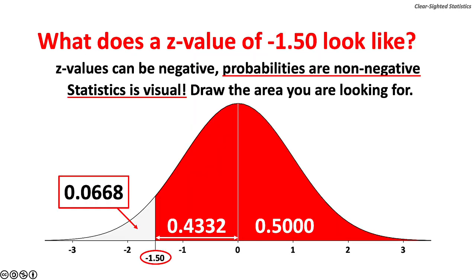What does a z-value of negative 1.50 look like? Negative z-values are on the left side of the curve. Of course, probabilities for area under the curve can never be negative. A z-value of negative 1.50 represents 43.32% of the curve to the left of the center line, with 6.68% in the left tail. The area to the right of the curve represents 50% of the area under the curve. Statistics is visual — draw the area you are looking for, as doing so is very helpful.